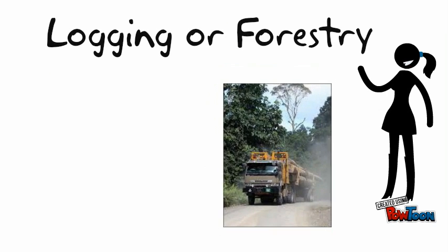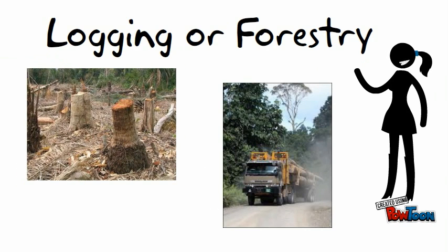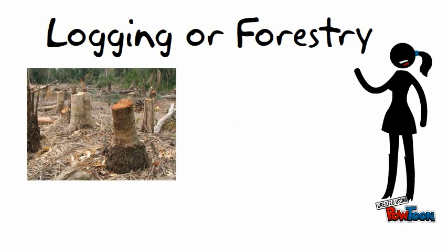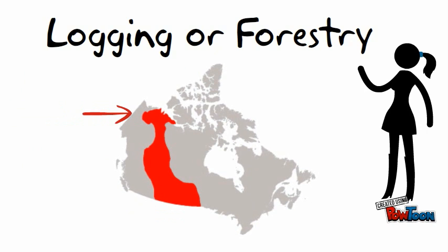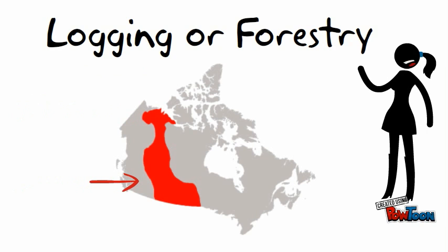The second industry is the logging or forestry industry. As we learned yesterday, logging is when we cut down trees to make pulp and paper products and lumber to make houses. However, there are not a lot of trees in the northern part of the interior plains, so logging only happens in the southern part. Please record the name of this industry beside number two and write exactly what is cut down.